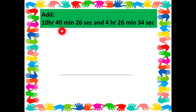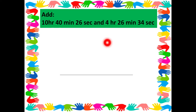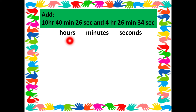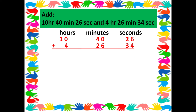Let us learn with the help of one more question. We will be adding 10 hours, 40 minutes, 26 seconds and 4 hours, 26 minutes, 34 seconds. The way is the same — first we write the different units: hours, minutes, and seconds. Then we arrange the two times and start adding them.